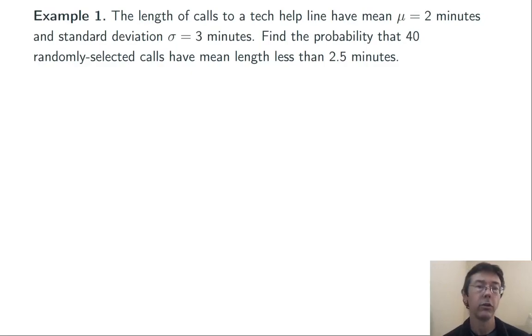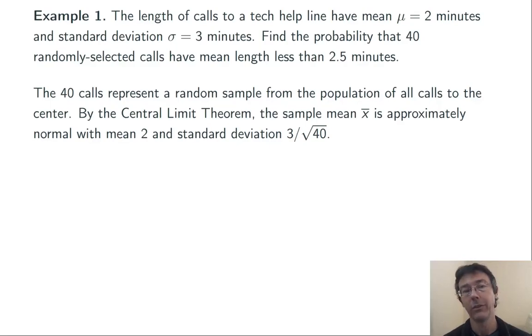Let's do a specific example to try and make this clearer. The length of calls to a tech helpline have mean μ equal two minutes and standard deviation σ equals three minutes. By the way, we don't know anything else about the distribution of the lengths of calls to this helpline, just the mean and standard deviation. Find the probability that 40 randomly selected calls have a mean length less than 2.5 minutes. We wouldn't be able to find the probability that an individual call is less than 2.5 minutes, simply because we don't know the exact distribution of the length of the calls. However, when we're looking at the mean of 40 calls, we can use the central limit theorem.